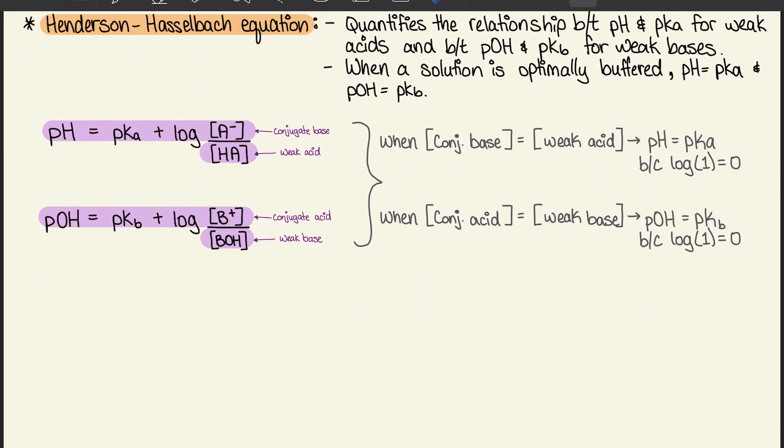We're going to move on to the Henderson-Hasselbalch equation, which quantifies the relationship between pH and pKa for weak acids and between pOH and pKb for weak bases. When a solution is optimally buffered, pH equals pKa and pOH equals pKb. Here we have the two equations for acids and bases: pH or pOH equals pK plus the log of conjugates on top and the weak acid or base at the bottom.